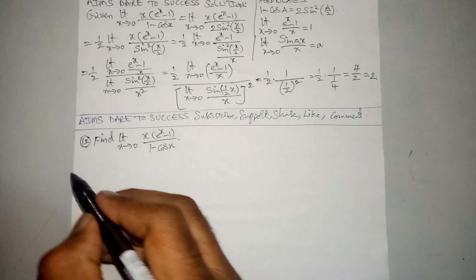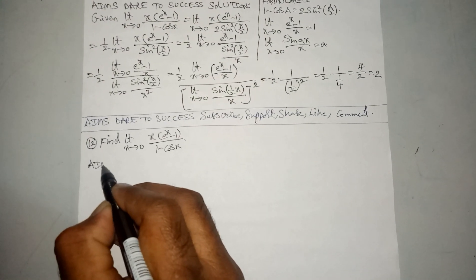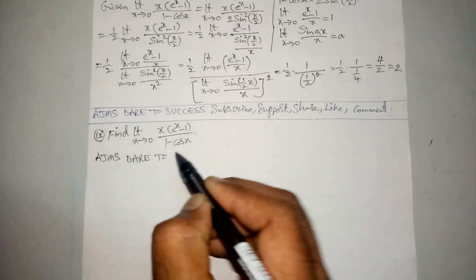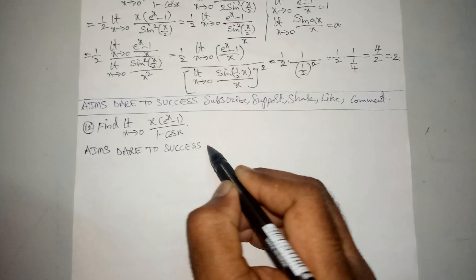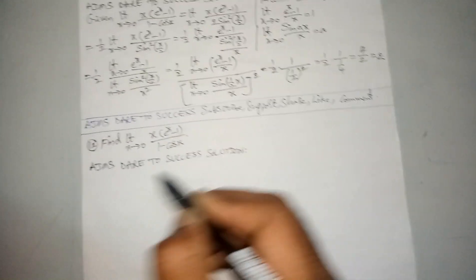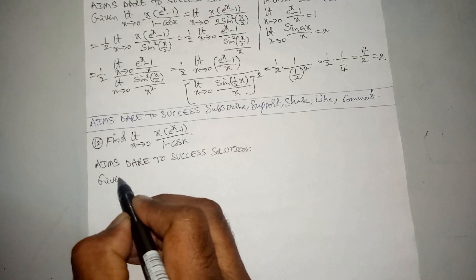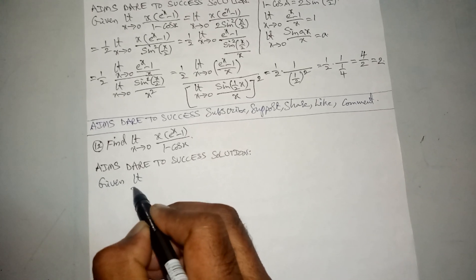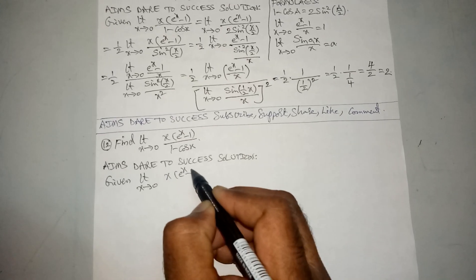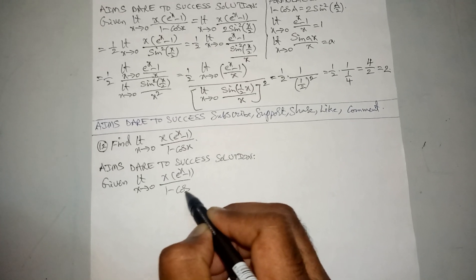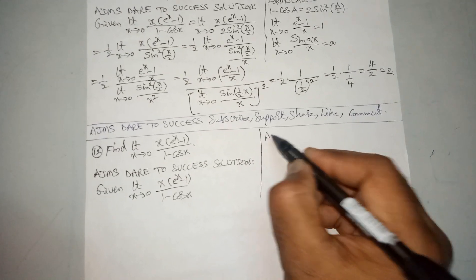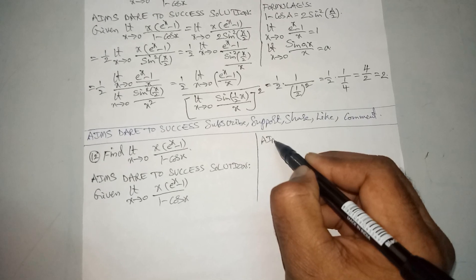So I am telling you the shortcut. The solution: given value is limit x tends to 0 of x times a to the power x minus 1, divided by 1 minus cos x. Here I am writing the formulas, my dear friends.